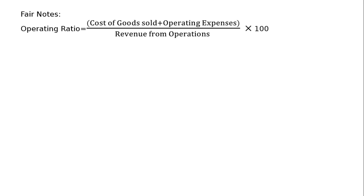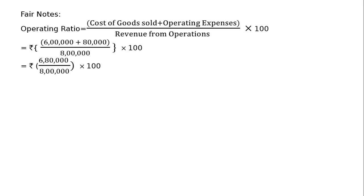Now for the final answer, operating ratio equals cost of goods sold plus operating expenses, divided by revenue from operations, multiplied by 100. That is Rs. 6,00,000 plus Rs. 80,000, divided by Rs. 8,00,000, multiplied by 100 — which equals Rs. 6,80,000 divided by Rs. 8,00,000 multiplied by 100. That equals 85%. This is your final answer.